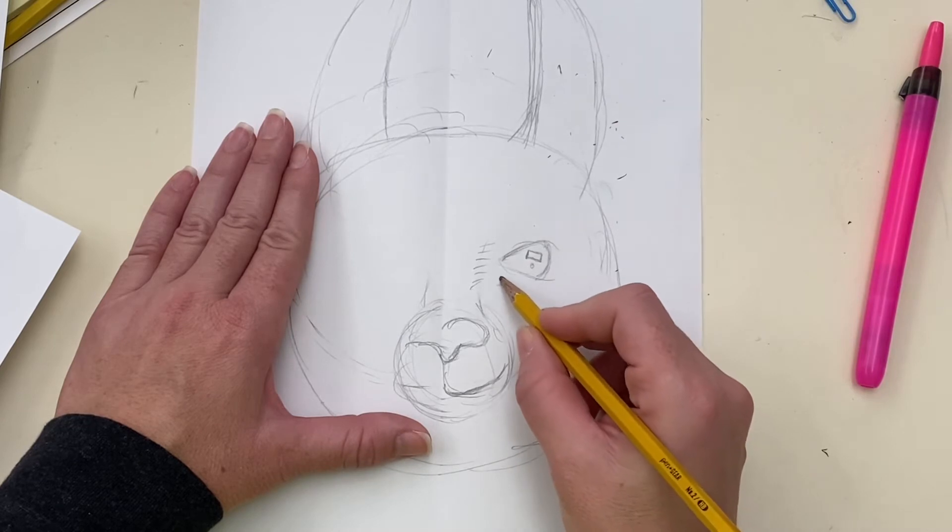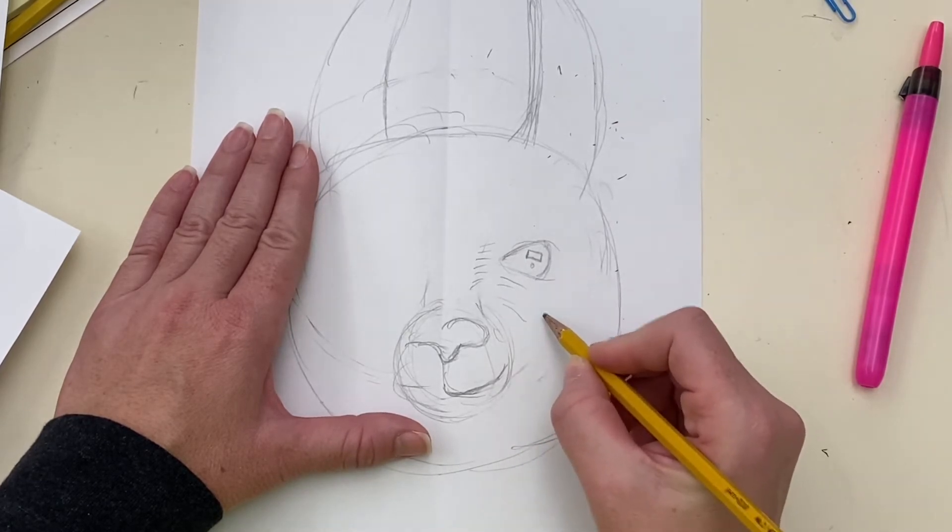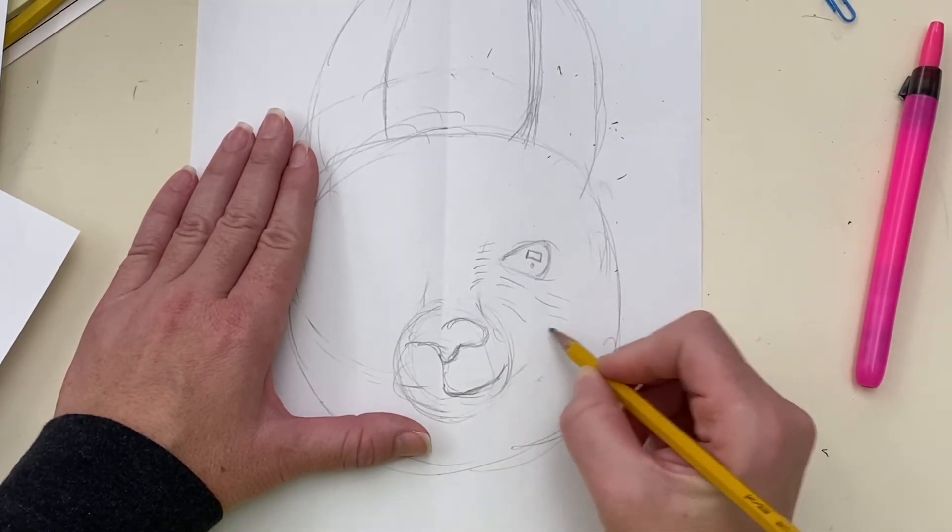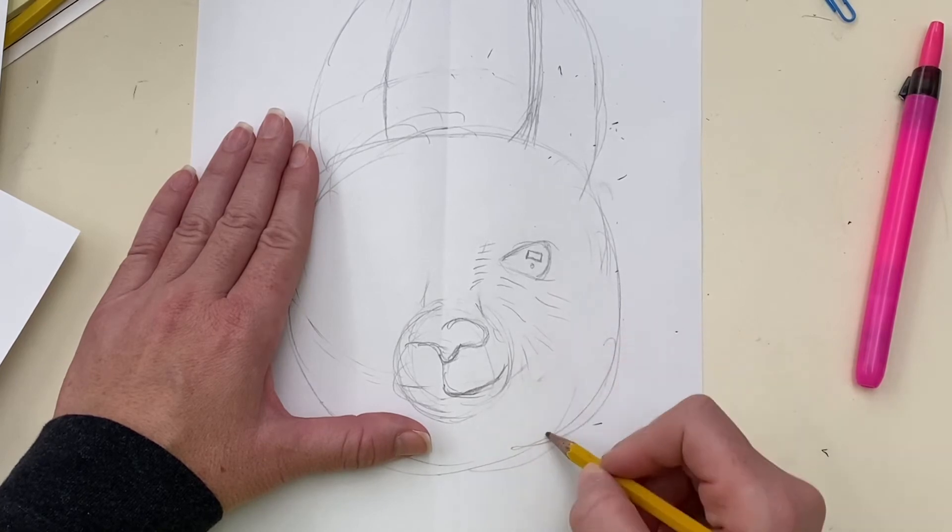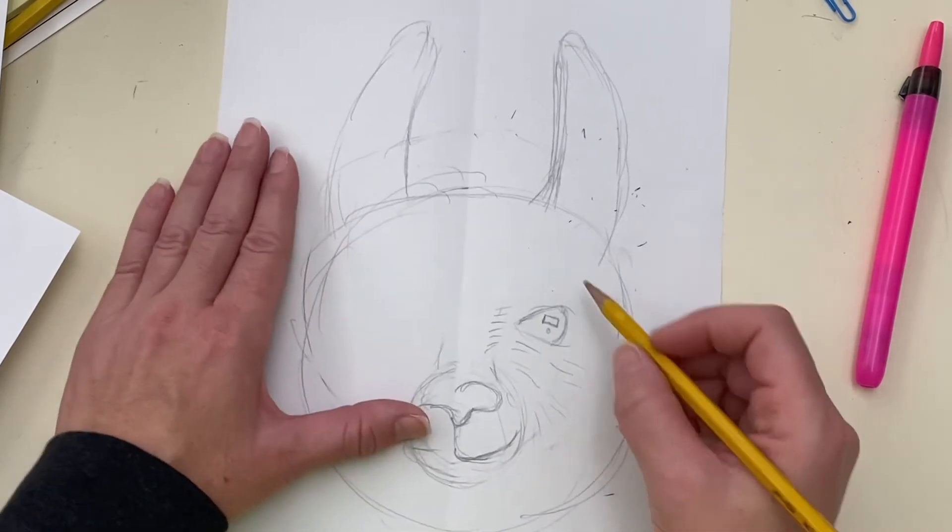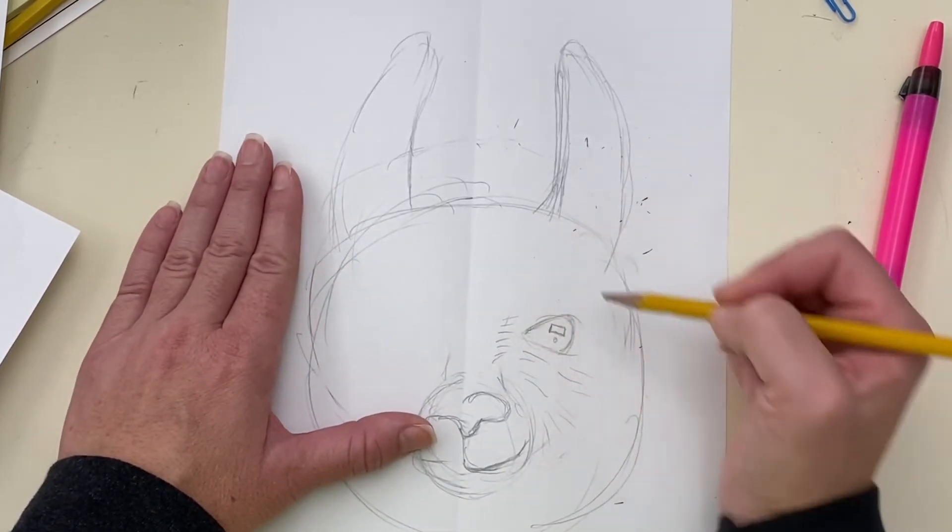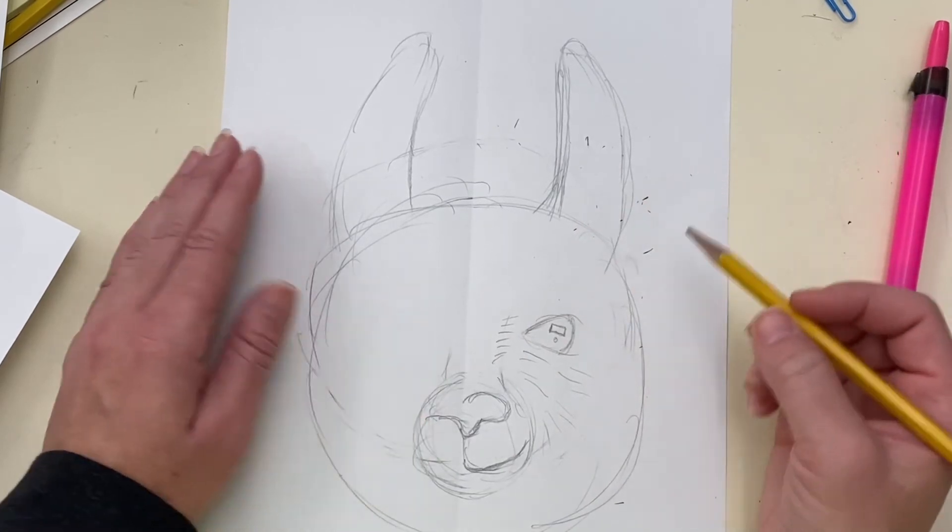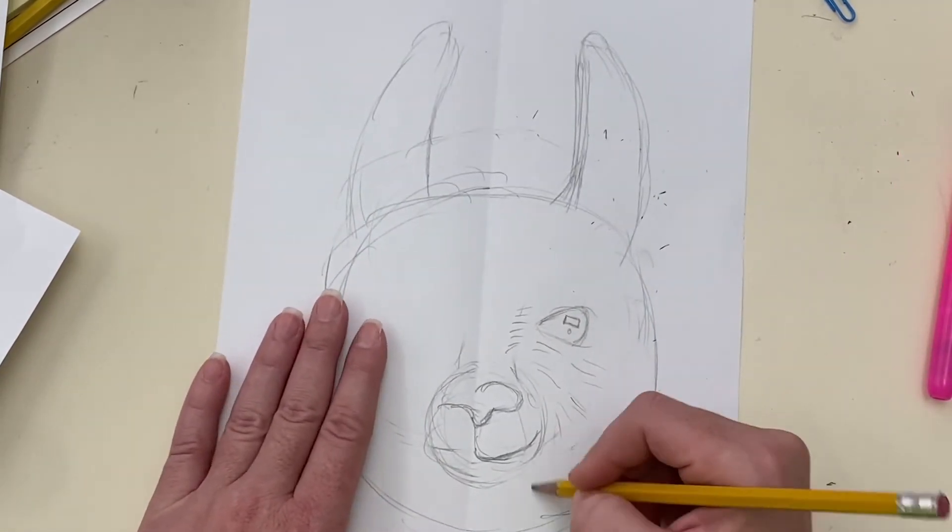And then right here they kind of start coming down and then here they go that direction. So it looks really weird if you make the hairs go the wrong direction. So look at your photograph and make sure you're going the right ways with the hair.